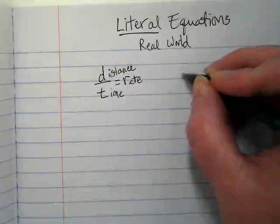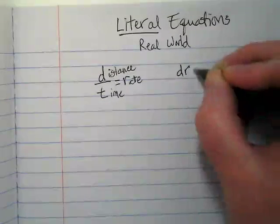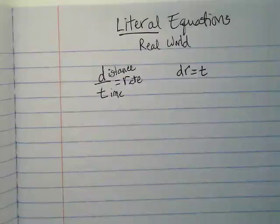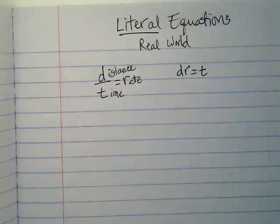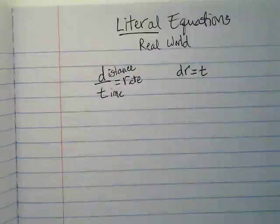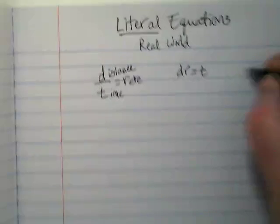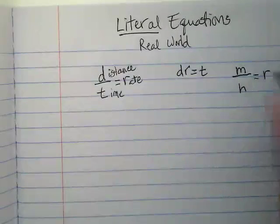I could rewrite this as distance times the rate equals your time. Another equation that is related to this, but we use different variables, is this over this equals this.